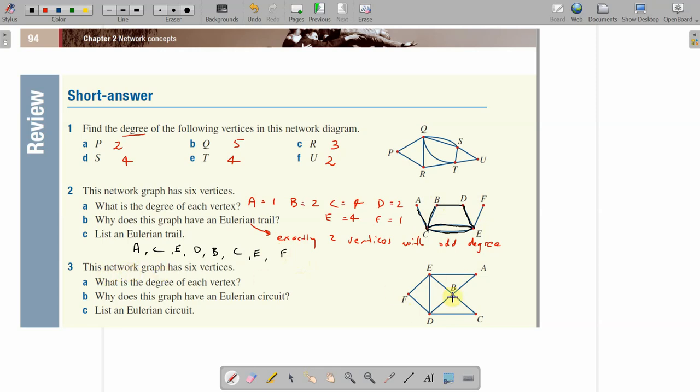This new one here has six vertices just like the previous one. What's the degree of each vertex? Starting with A alphabetically, it has a degree of 2. B looks like one, two - four. C is 2. D has one, two, three. E has one, two, three, four. And F has 2.